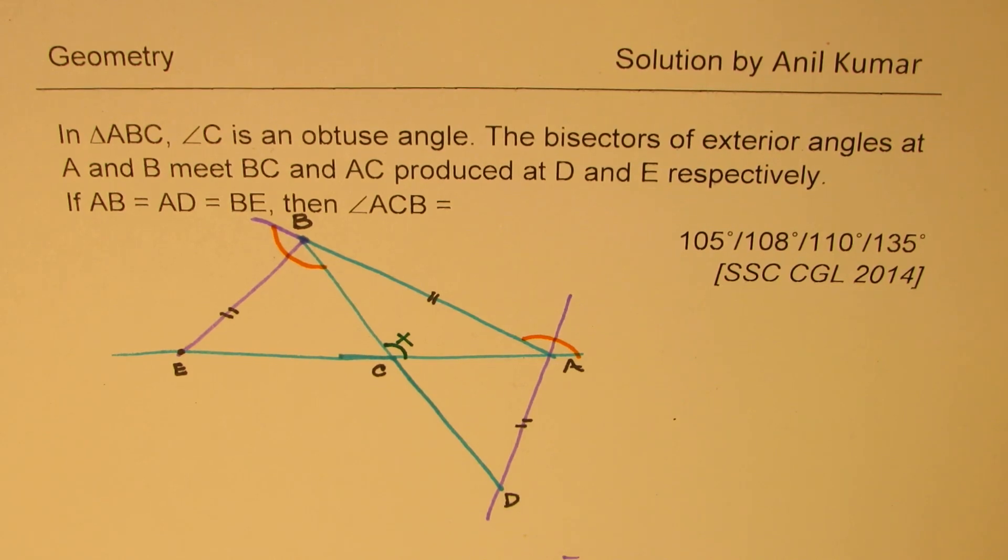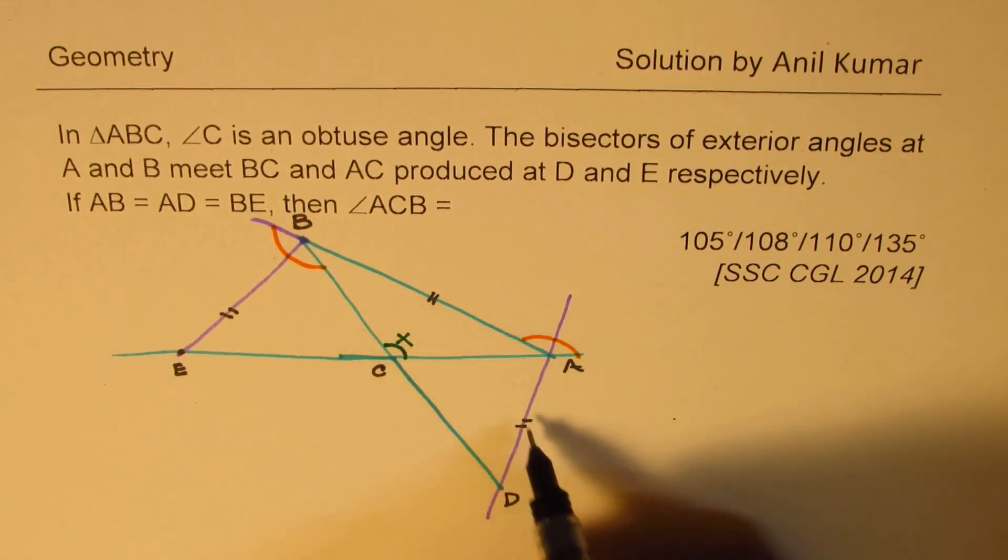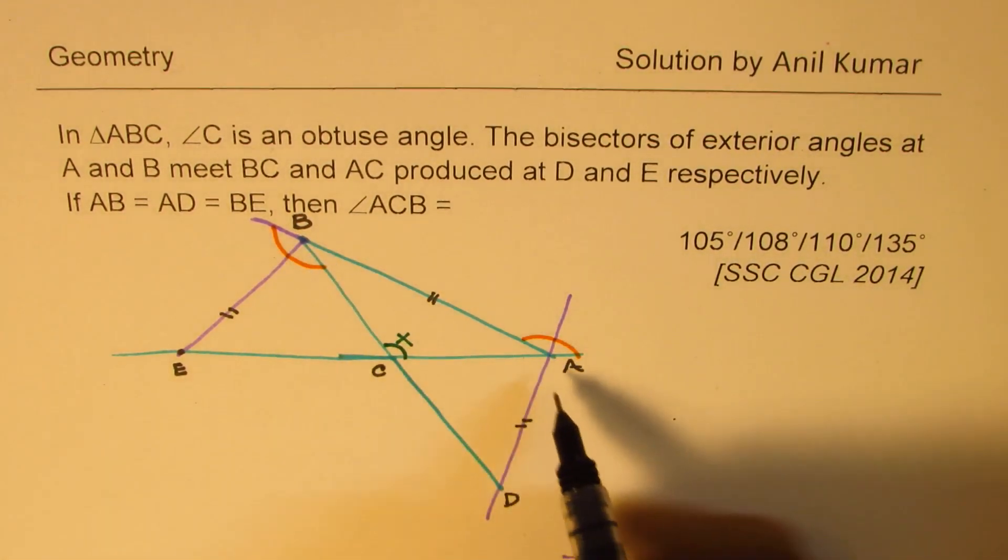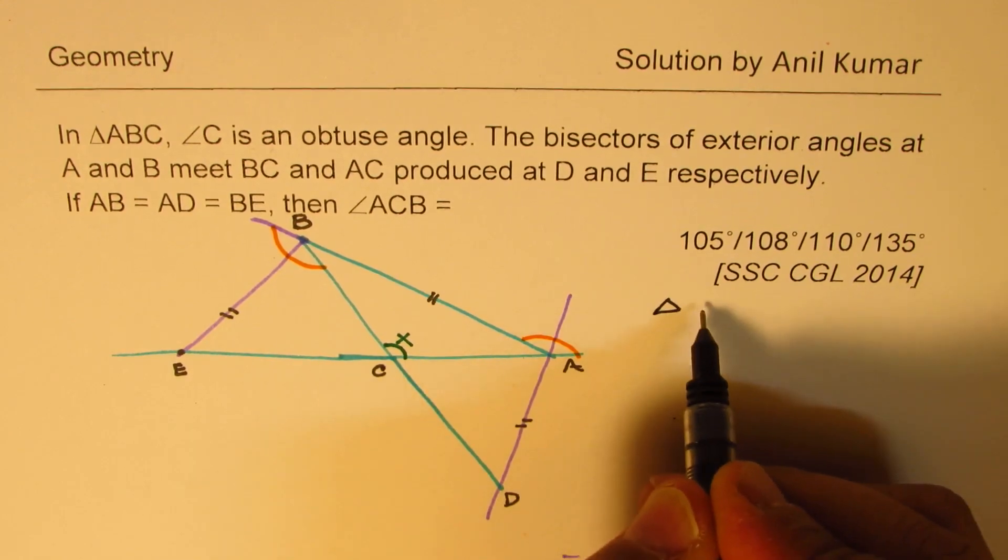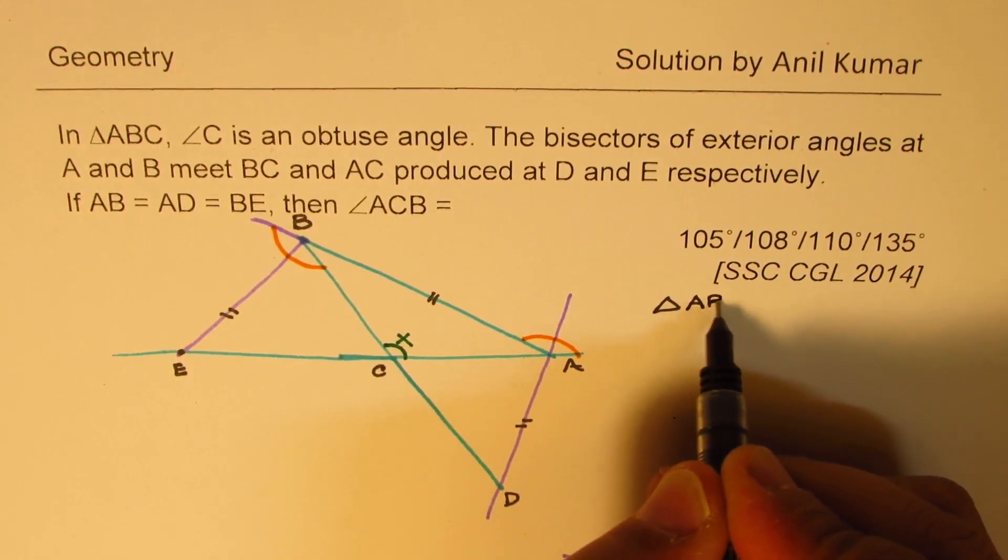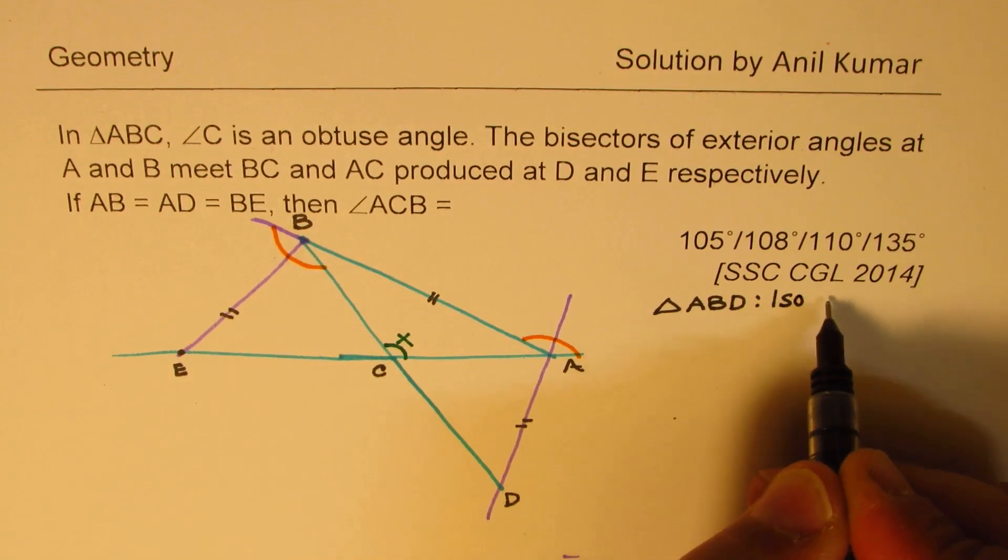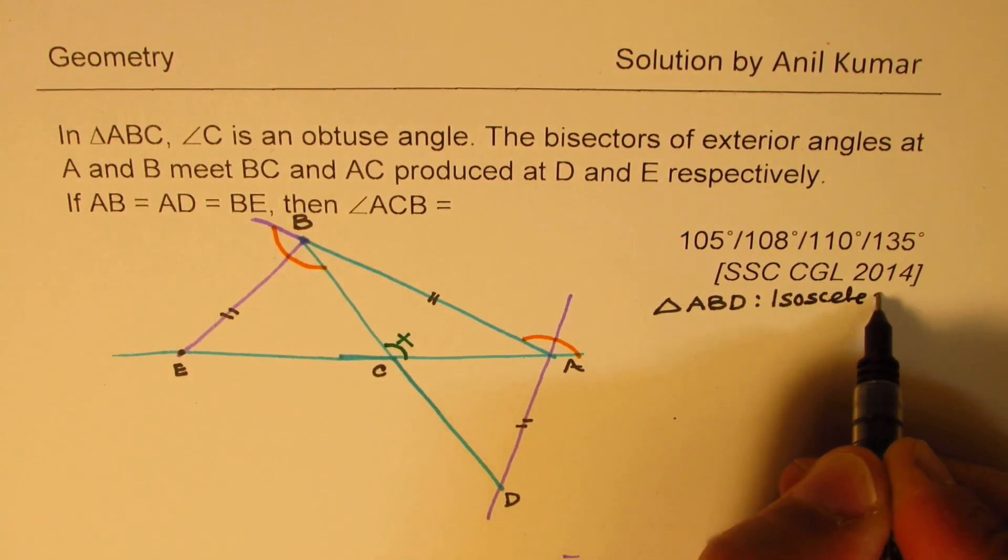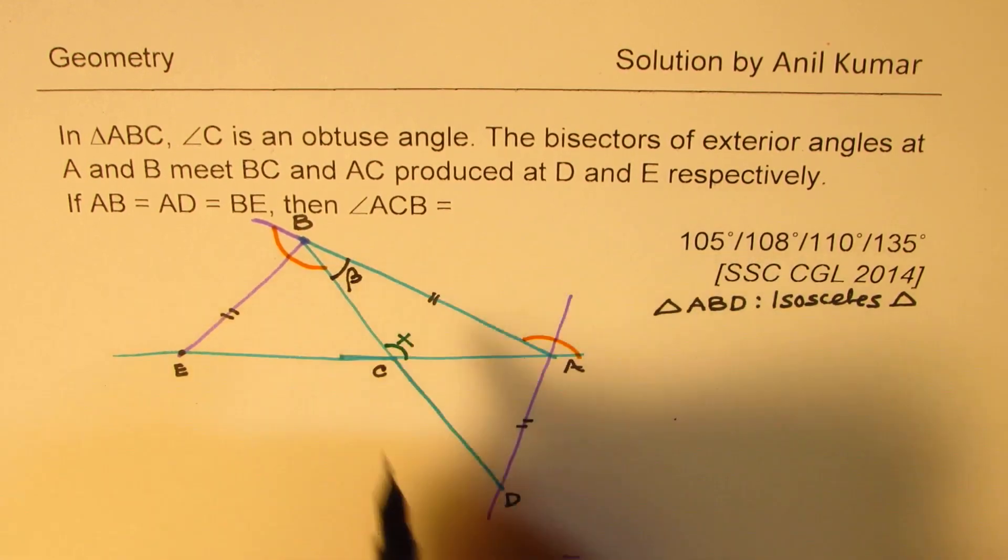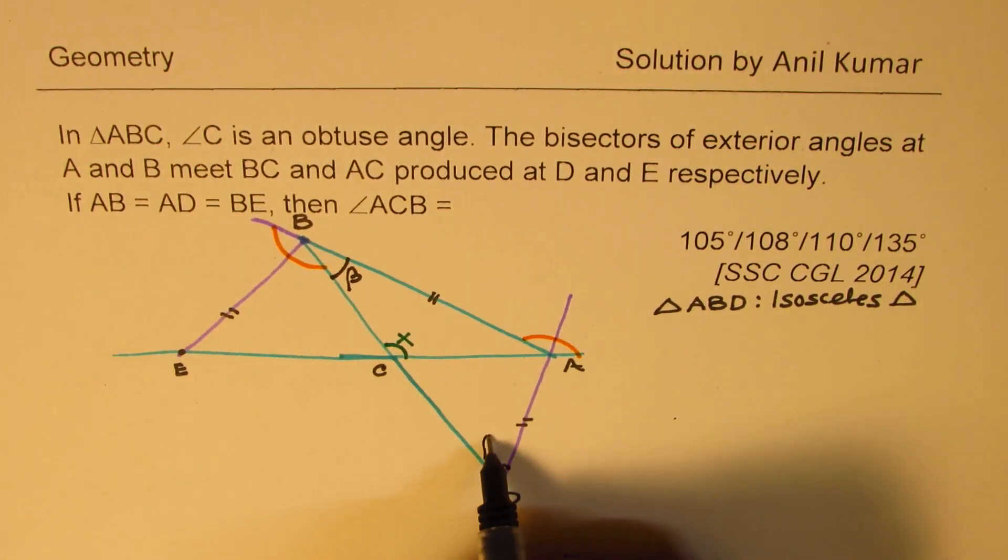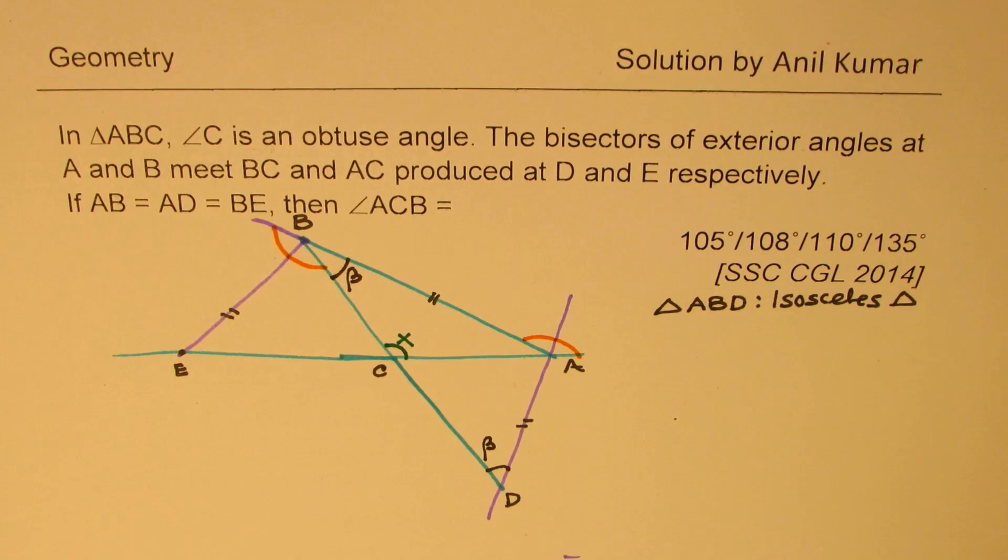Okay. Let's begin. What we can do here is since these two are given angles equal, we can look into the triangle ABD. So let's look into the triangle ABD. It's an isosceles. So if this angle is, let's say, beta at B, that will also be beta. So we got these two angles as beta.